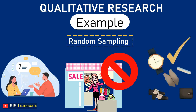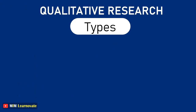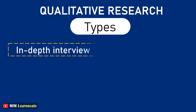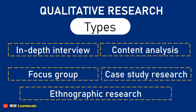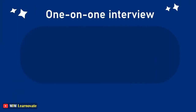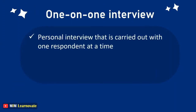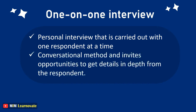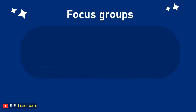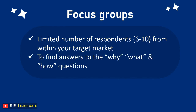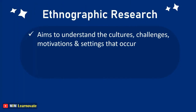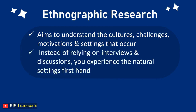Types of qualitative research methods include in-depth interviews, focus groups, ethnographic research, content analysis, and case study research. A one-on-one interview is a personal, conversational method carried out with one respondent at a time, inviting opportunities to get detail in depth. A focus group includes a limited number of respondents from your target market to find answers to why, what, and how questions. Ethnographic research aims to understand cultures, challenges, motivations, and settings by experiencing natural settings first-hand rather than relying on interviews.